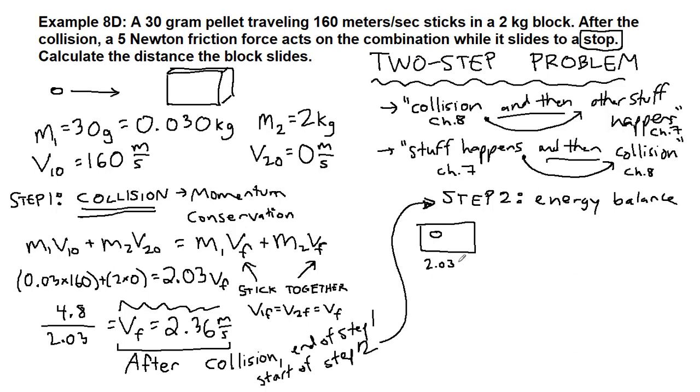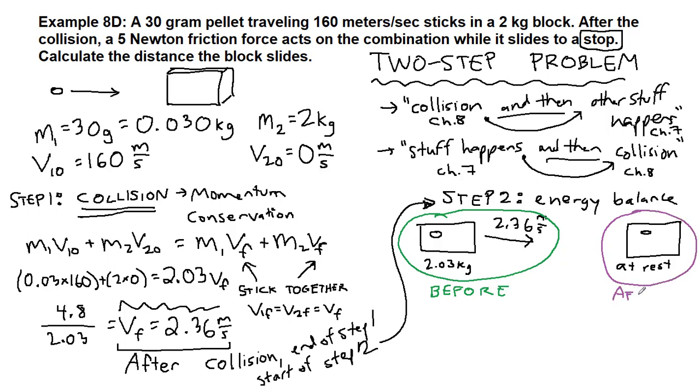So in this case we have a block with a pellet in it of mass 2.03 kilograms that is moving with a speed of 2.36 meters per second. That's the beginning of our step two. The collision has already happened, it is starting to move. And the end of our problem is this same block and pellet stops moving. We're at rest, we slide to a stop. So we have seen these kinds of problems back in chapter seven. This is our before situation and this is our after situation. And the other important thing that we need to make sure that we're thinking about is that friction is acting here, so there is going to be a work term. So the friction force is acting here.